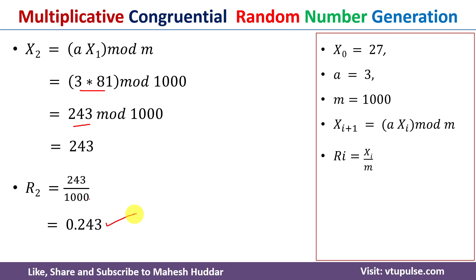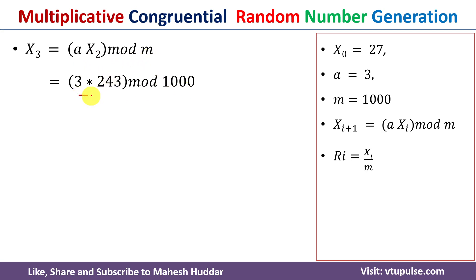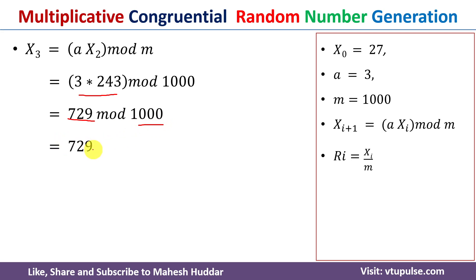Now we need to calculate X₃. X₃ = a · X₂ mod m. Here a = 3, X₂ = 243, m = 1000. So 3 × 243 = 729, which is also less than 1000, so the remainder is 729. Therefore X₃ = 729.